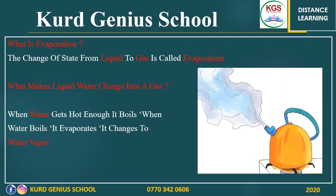Look at the picture. We have a kettle on the stove with fire under it, and inside the kettle we have water. When the water gets hot enough, it boils and will change to water vapor — it will change to gas. Liquid is inside the kettle and gas comes outside the kettle. So this is called evaporation.